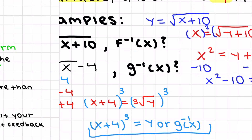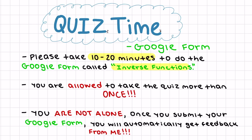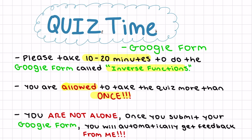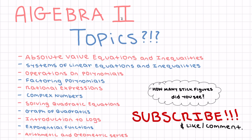Now it's time to quiz yourself. Under the description of this video I've put a link to a Google Form. It should take you 10 to 20 minutes — it's called Inverse Functions and has about five to six questions. You can take the quiz more than once. Once you submit, you'll automatically get feedback: an automated message on each question telling you how to approach it and why answers are correct or incorrect.